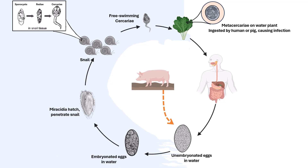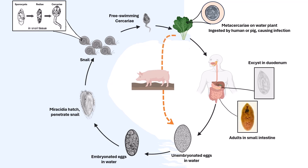After ingestion, the metacercariae excyst in the duodenum and attach to the intestinal wall. There, they develop into adult flukes in approximately three months, attached to the intestinal wall of the mammalian hosts, which are humans and pigs. The adults have a lifespan of about one year.